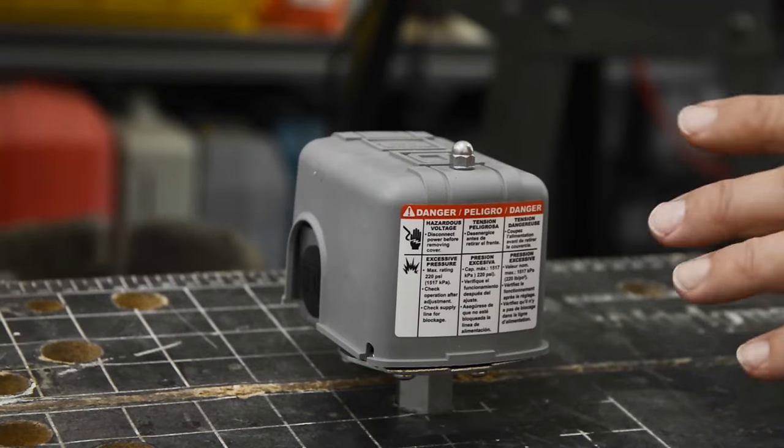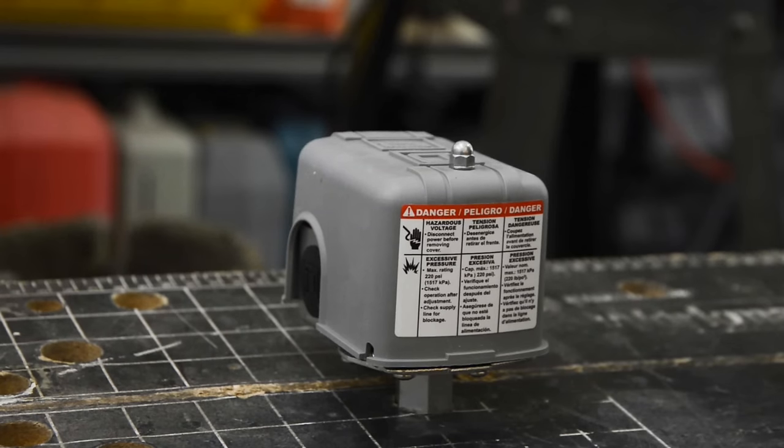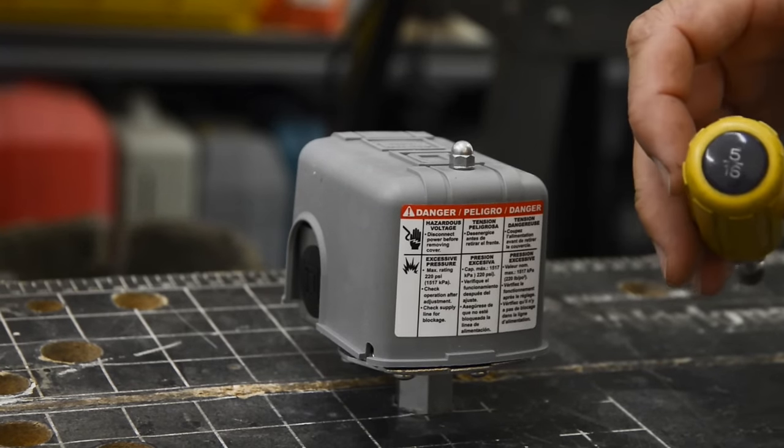We're going to adjust the Square D, which is a standard pump control switch. It's also known as a pressure switch.